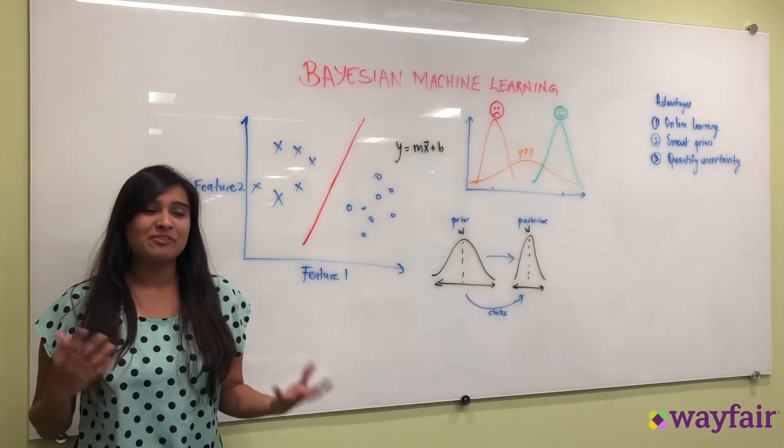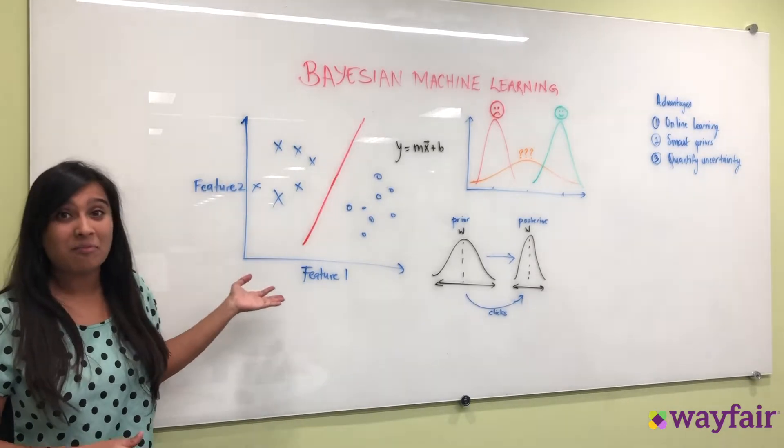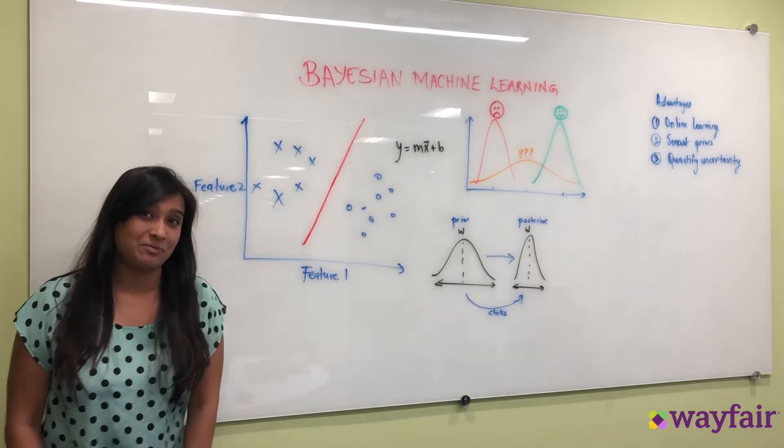I assume that most of you are familiar with machine learning by classification, regression. I'm going to talk you through a problem and then show you how this can be applied in a Bayesian framework.